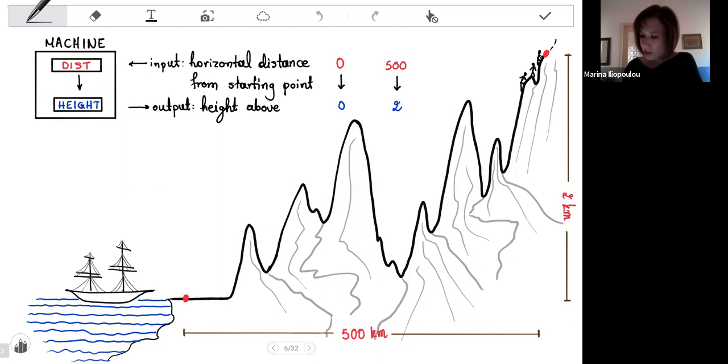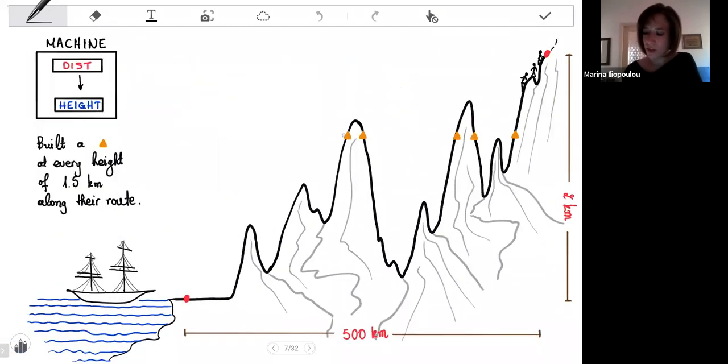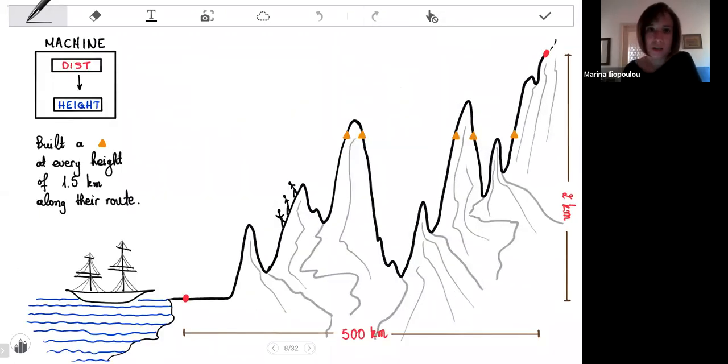They have this nice machine and they've also built along the way a lot of shelters. They've actually built one shelter at every height of 1.5 kilometers. On their way back they equipped these shelters very well and it's a good thing they did because the weather over there is not as nice as this picture may suggest.